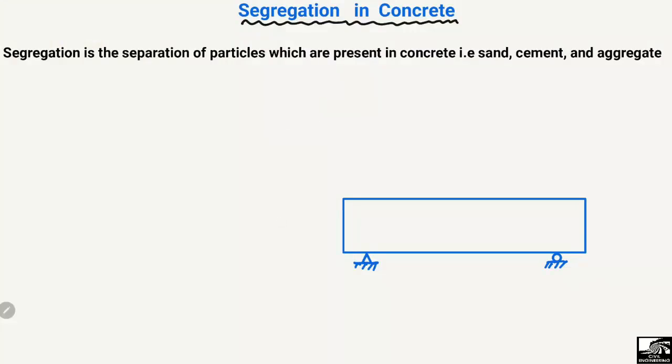Hello guys, welcome back to E7 Engineering YouTube channel. Please subscribe to our channel for daily engineering videos. Today's lecture we are going to talk about segregation in concrete — what is segregation, why it occurs, and how we can avoid it in concrete structures. I will explain this phenomenon with the help of examples so it will be easy to understand.